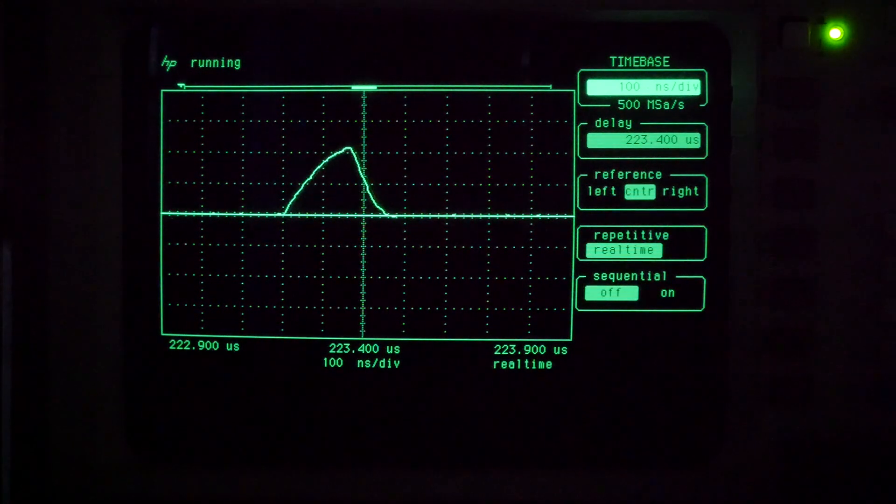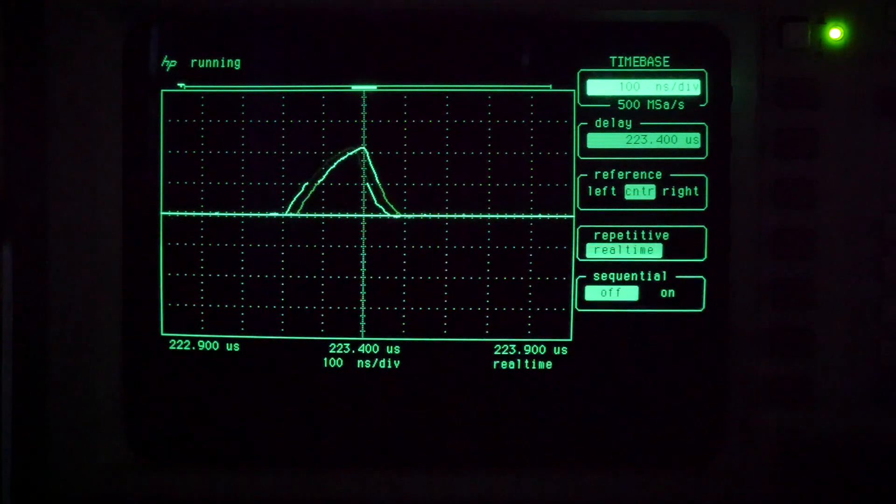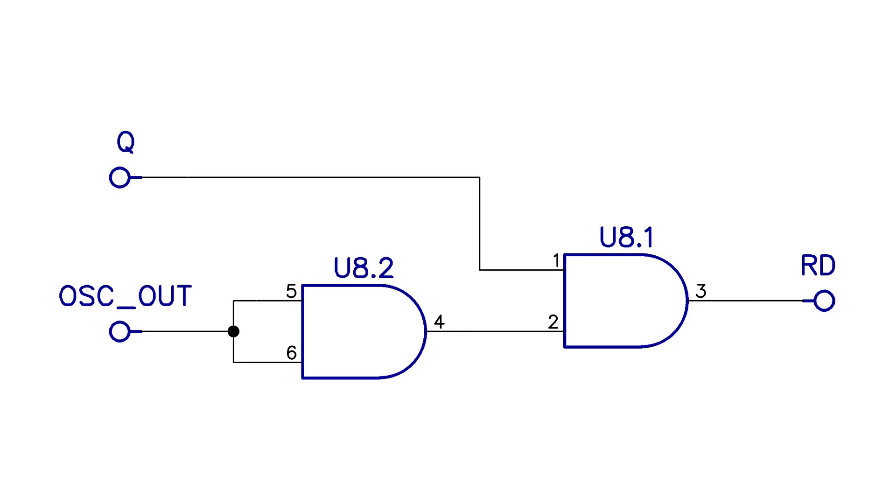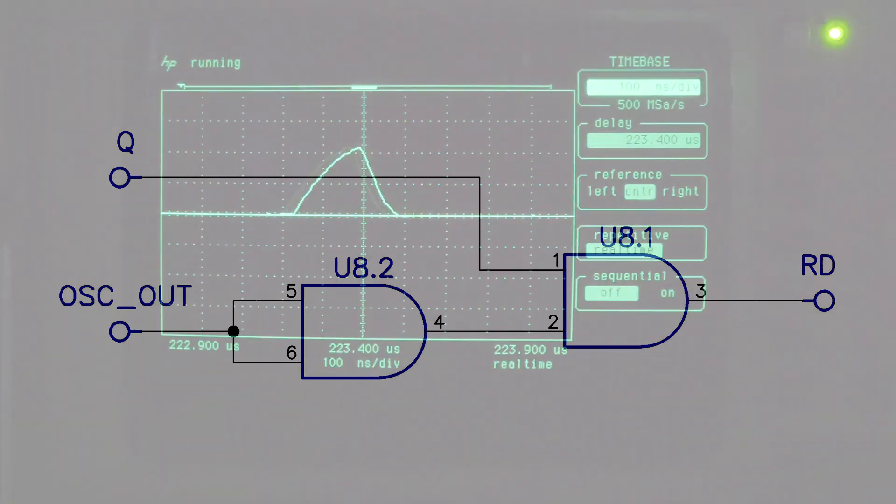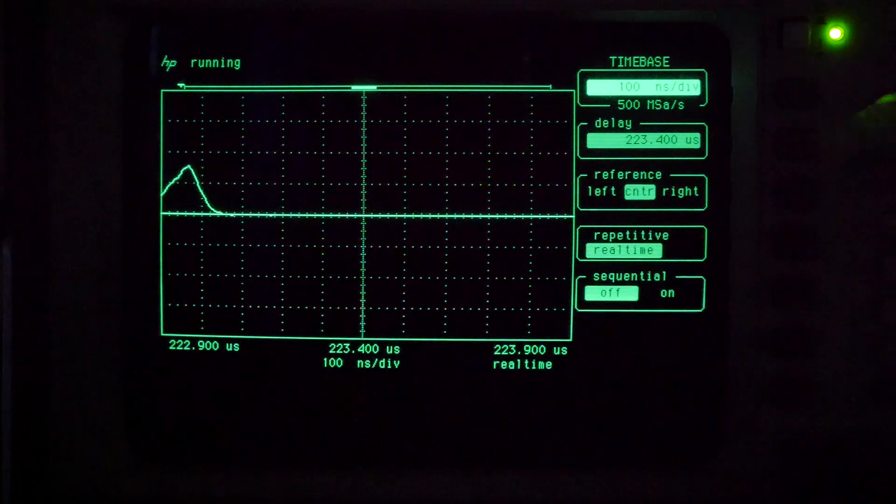Let's see whether we can make that better by introducing some extra propagation delay on the oscillator output of our clock chip. What we'll do is take one of the unused AND gates, tie the two inputs together, and put that between the oscillator output of the clock chip and the AND gate we're using to generate this signal here. That's what that looks like, all else being equal.